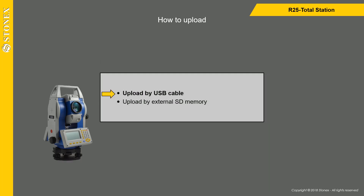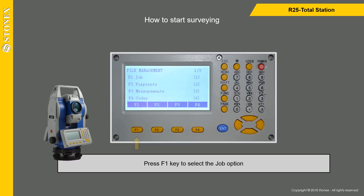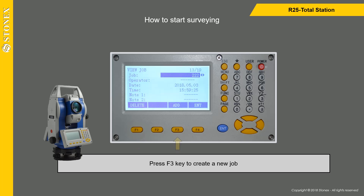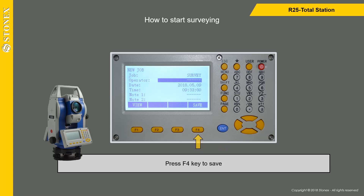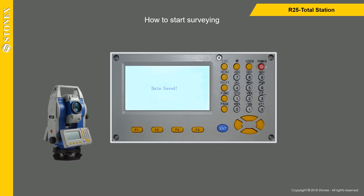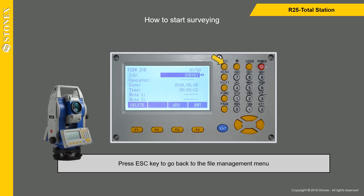If you want to upload by USB cable, press F1 to select the job option. Press F3 to create a new job. Insert a name for the job using the keyboard and press Enter to confirm. Then press F4 to save.